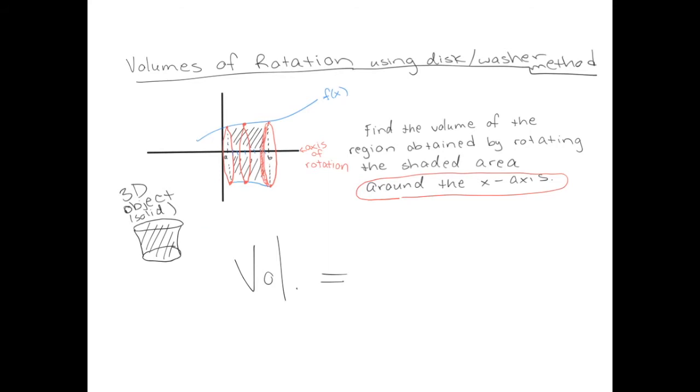So what is the volume of that disk? My disks look something like this, with a little height or width of change in x. So that width of the disk should be multiplied times the area of this circle. Of course the area of this circle is pi r squared. So what is the radius here? The radius goes from the center of the circle out to the edge of the circle. That height right there is exactly f of x. So each disk has its own radius of f of x.